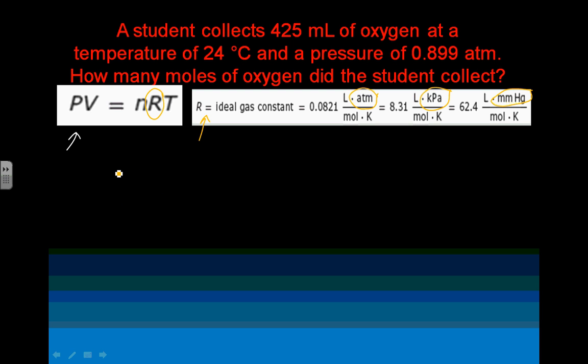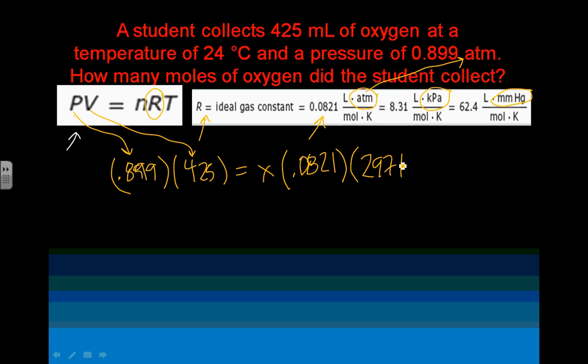So, I'm just going to plug and chug away from the problem. The pressure, 0.899 for the sake of space and time. I'm not writing the units, and it's absolutely wrong. And you should write the units, so don't do as I am doing here. Do as I say. The volume here is going to be 425 mils. It's going to equal... I'm looking for the number of moles. The R I've decided to use is 0.0821. Why? Because the unit here matches the unit of pressure in the problem. So, 0.0821 times the temperature here when I change it to Kelvin is going to be 297 Kelvin.